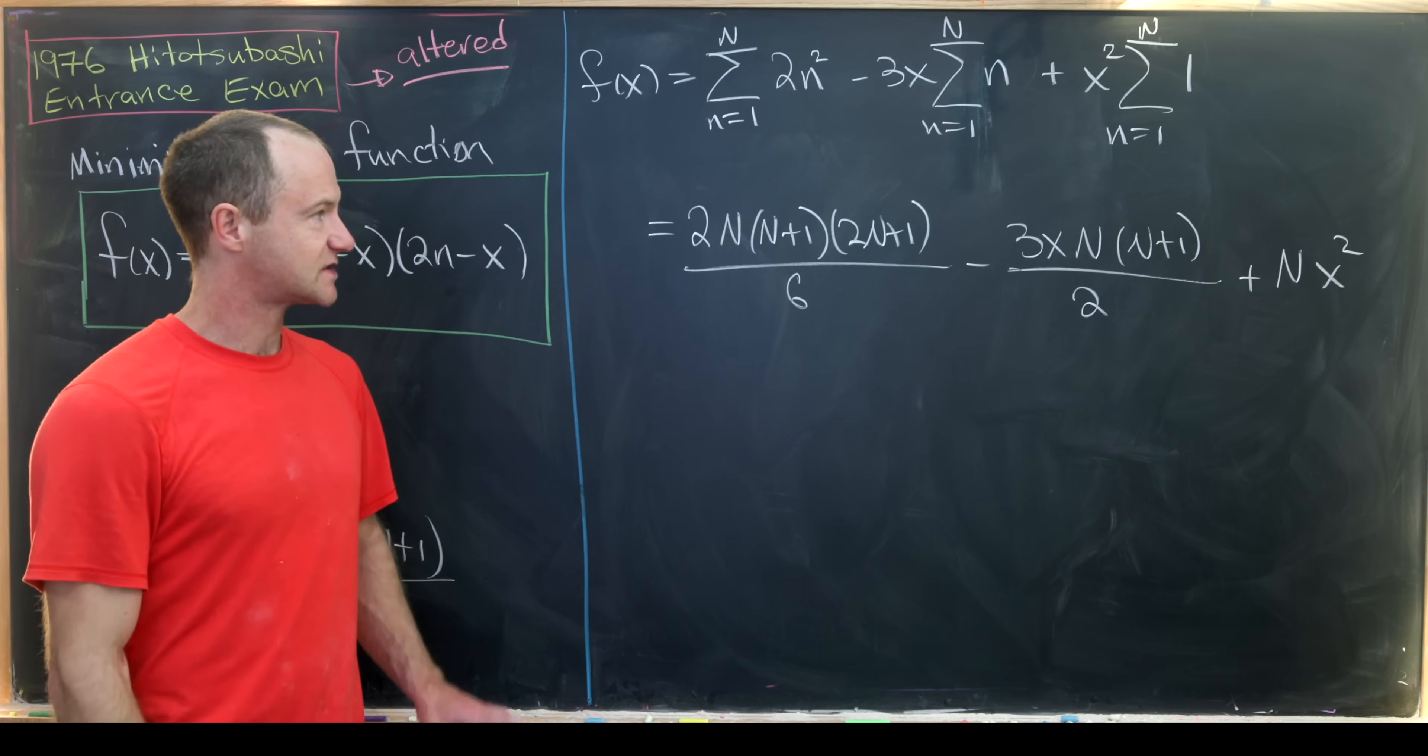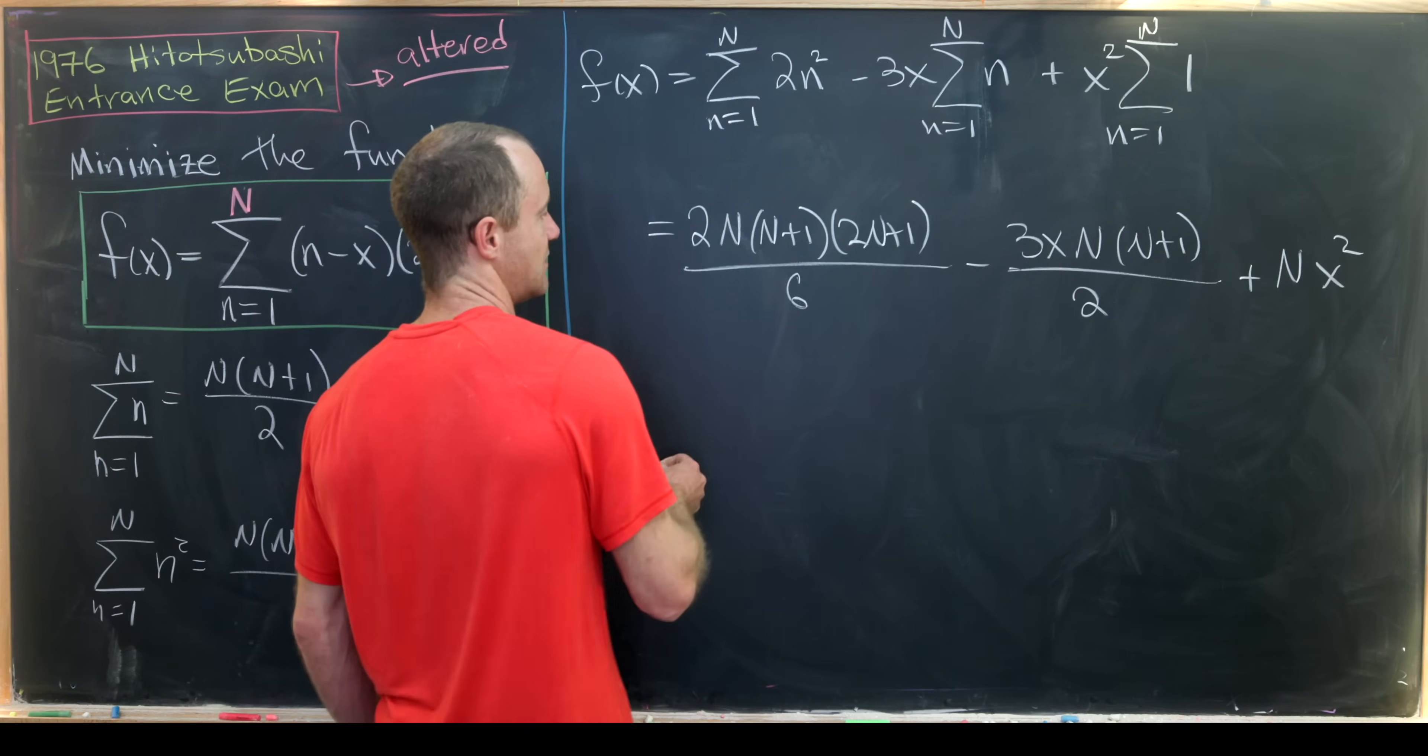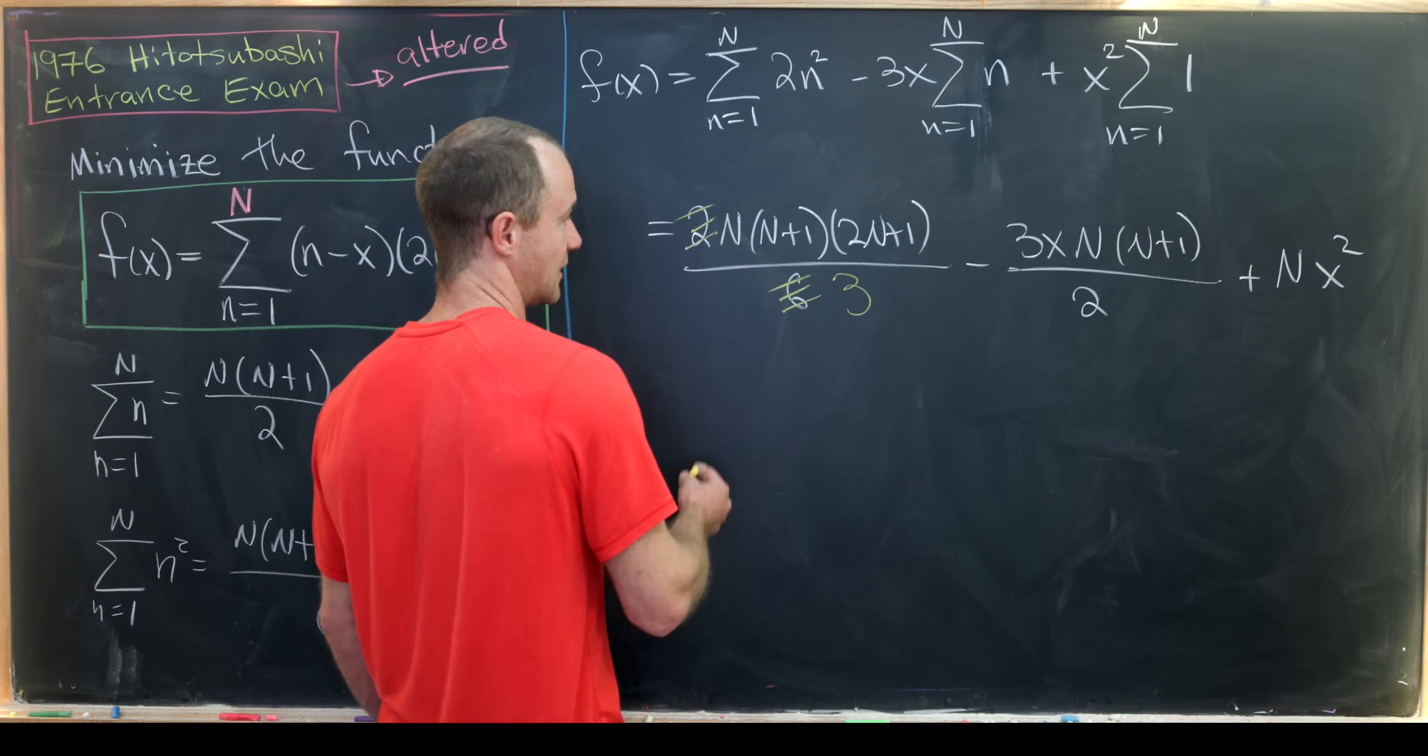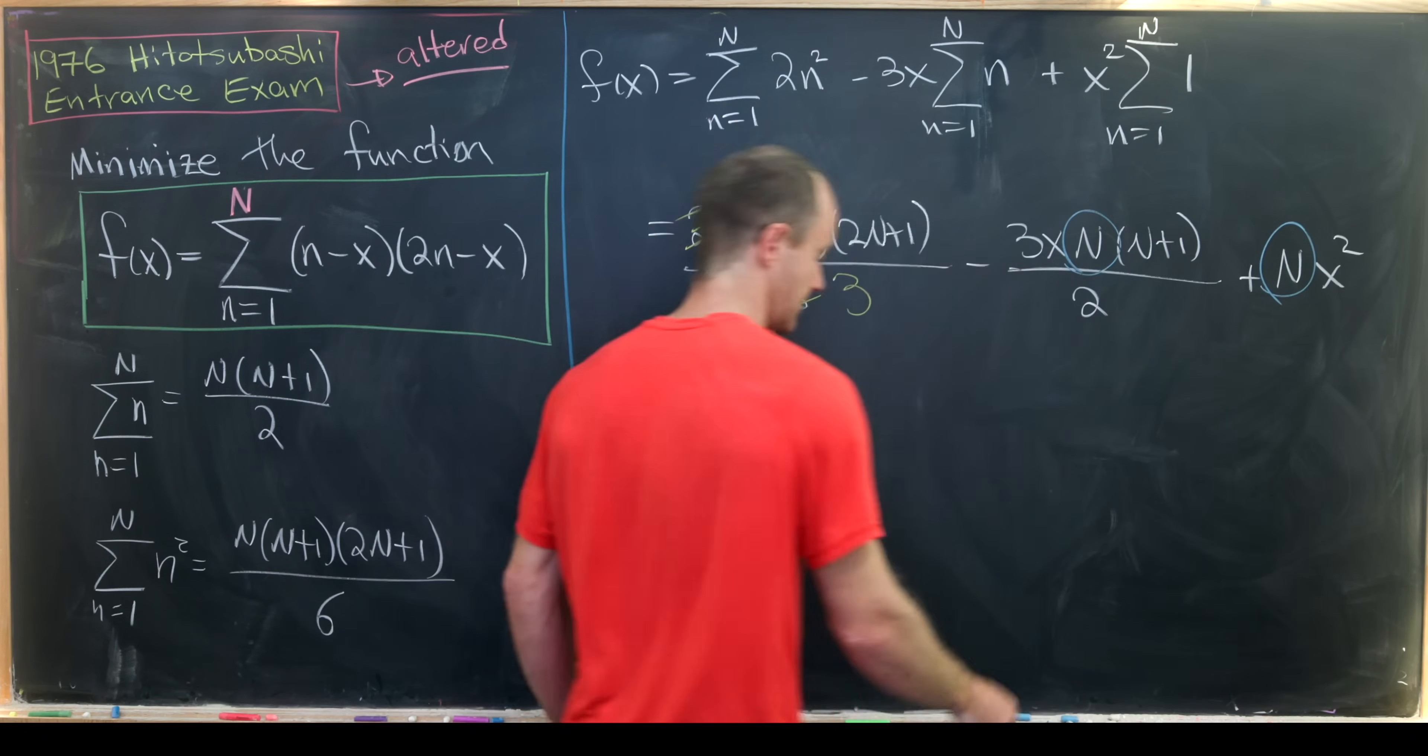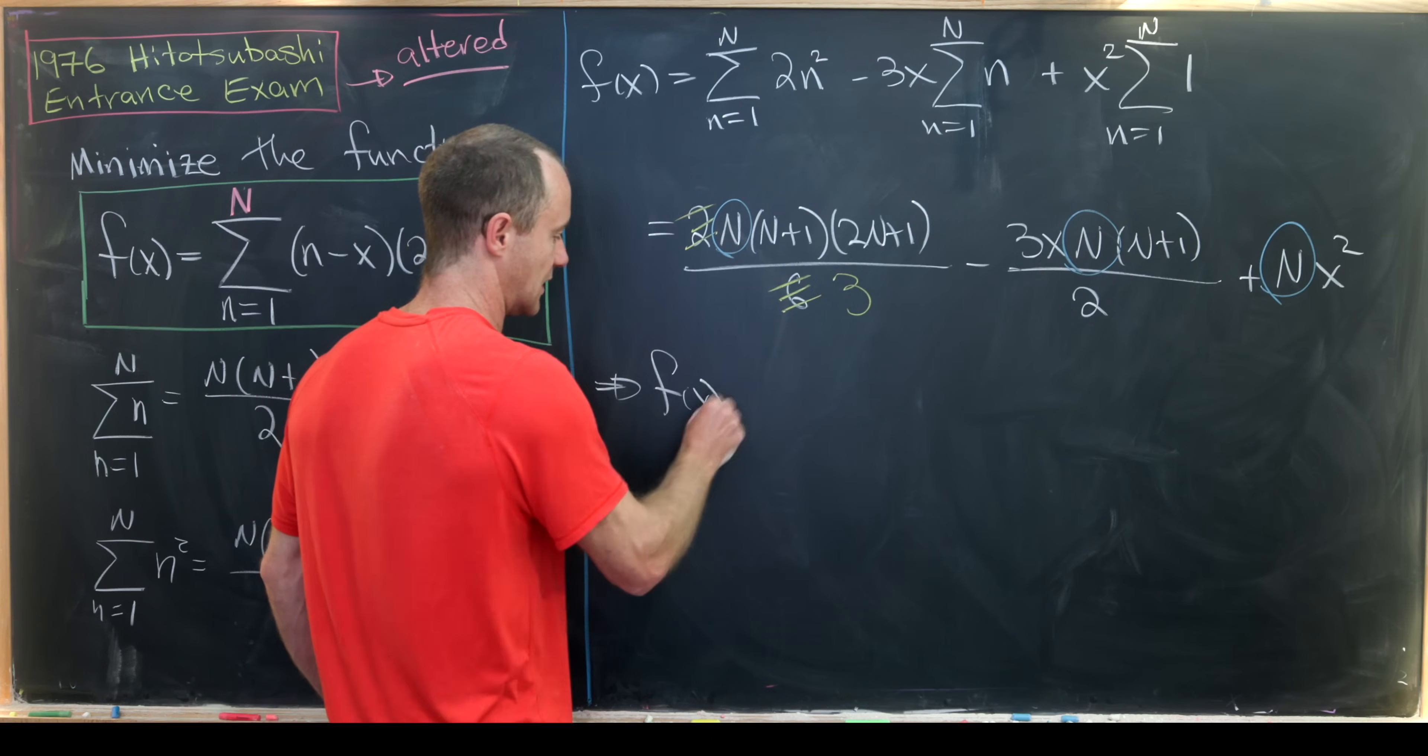Okay so that's starting to look good. Now let's note that we can maybe cancel this 6 with this 2 down to a 3 in the denominator and then we can also factor a capital N out of the whole thing.